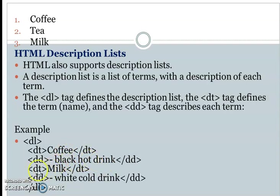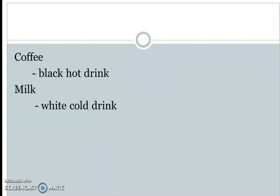Next, we define the term 'milk' using the DT tag, then close the tag. To define the description, we use the DD tag: 'white cold drink'. So coffee is described as a black hot drink, and milk as a white cold drink.